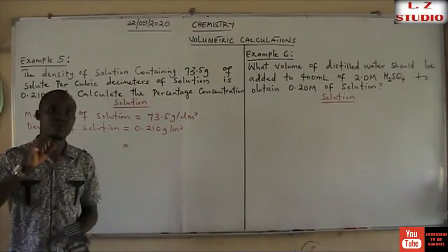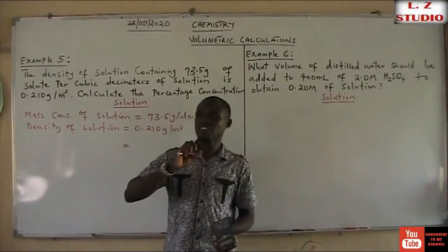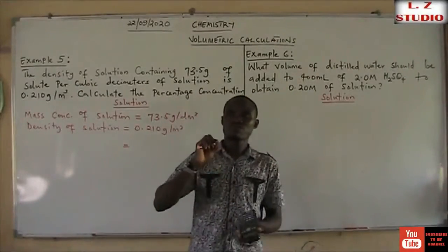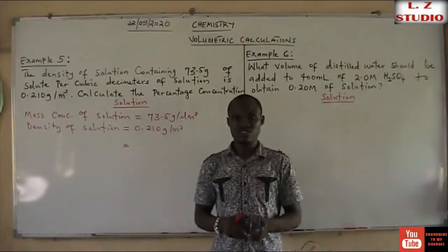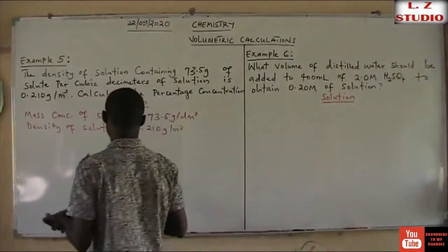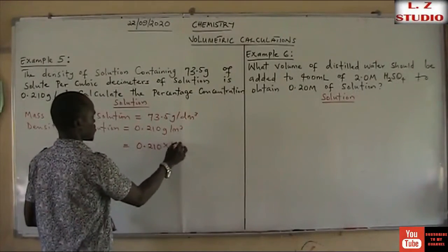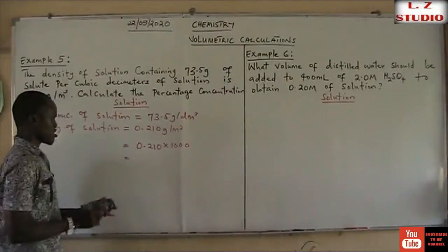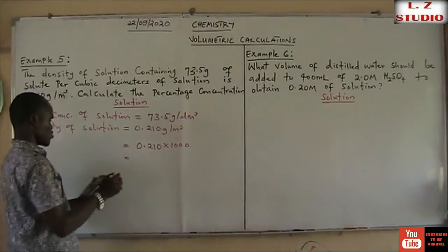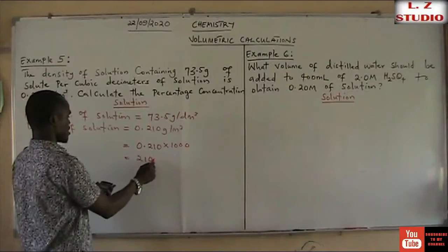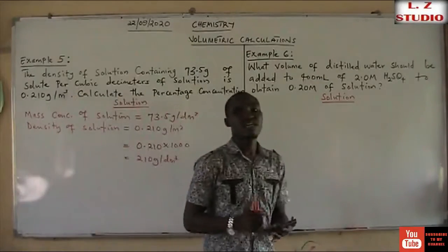If you are converting m³ to dm³, you multiply by 1000. So what we are going to do now is: 0.210 times 1000, which gives us 210 grams per dm³. So this is our new density.